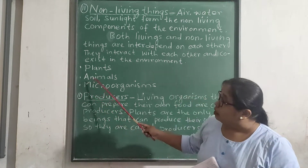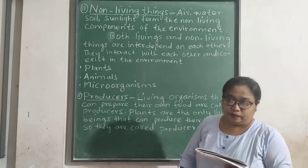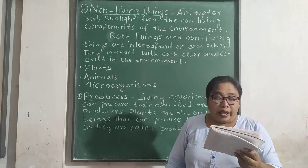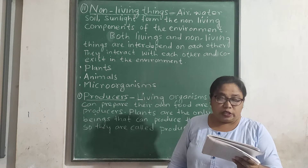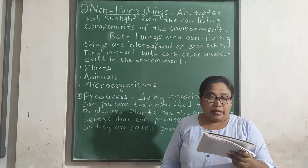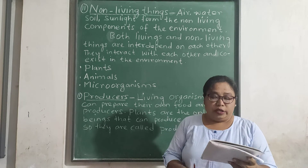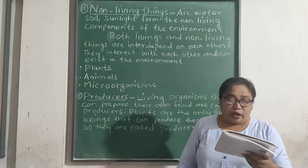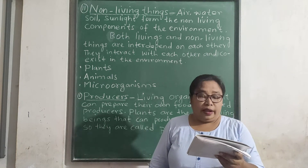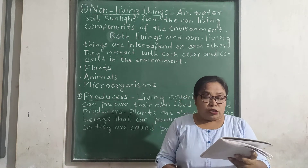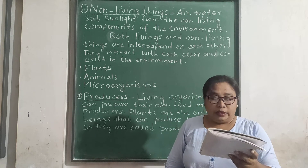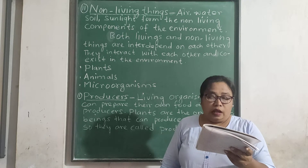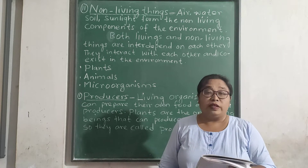Now let us discuss on animals. Unlike plants, animals cannot make their own food. They depend on plants and other animals for their food. Animals take in oxygen and release carbon dioxide into the air. Animals also need water for drinking. In this way, they are dependent on non-living components of the environment.